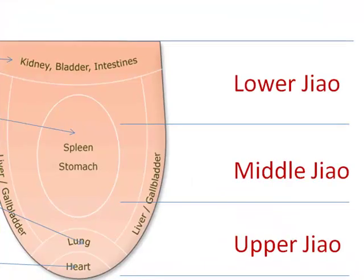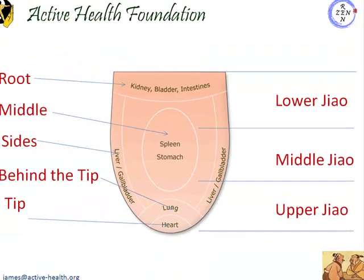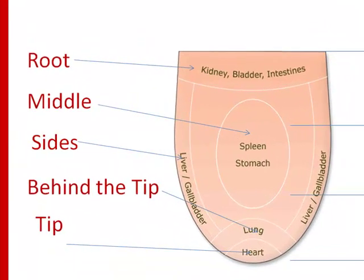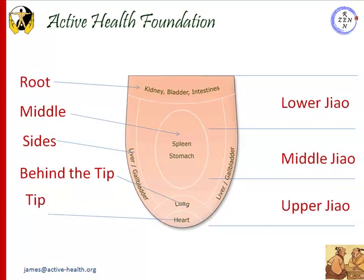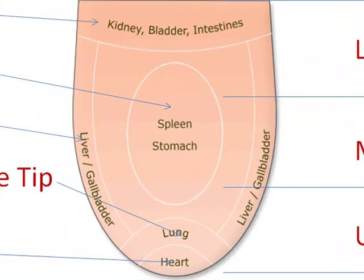The tongue is also important in speech. This diagram divides the tongue into lower, middle, and upper San Jiao, which represent the cavities of the body and the organs contained in them according to the theory of Traditional Chinese Medicine. At the root, this portion of the tongue represents the kidneys, bladder, and intestines. The middle of the tongue represents the spleen and stomach, whereas the sides represent the liver and gallbladder. The tip of the tongue represents the heart, and just behind the tip represents the lungs. We'll see shortly how we can identify various disharmonies according to presentations on these parts of the tongue.